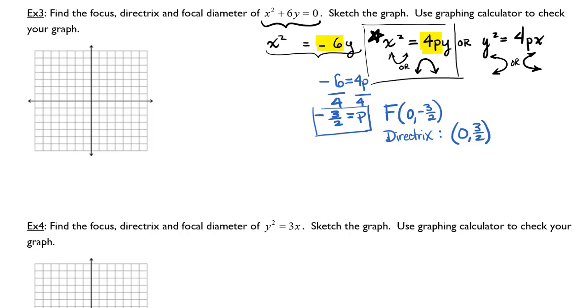I'm going to sketch the directrix. I'm going to let every other notch be 1 unit in length in both the x and the y direction. That means my directrix will be at 3 halves, focus will be at negative 3 halves, and my vertex will be at 0, 0.